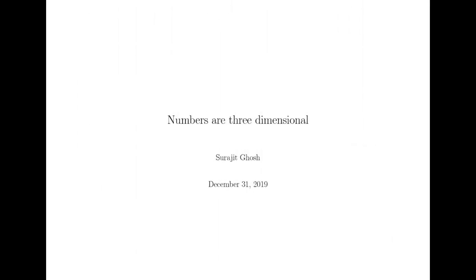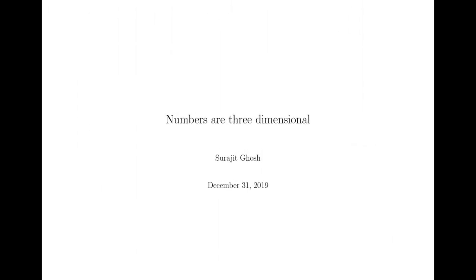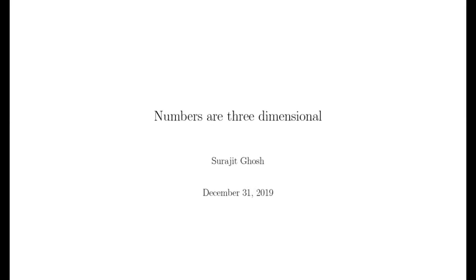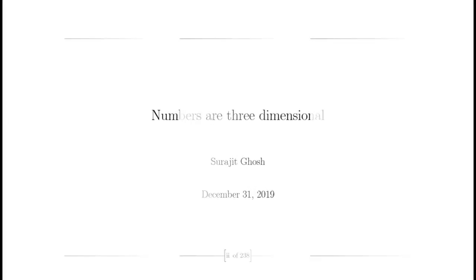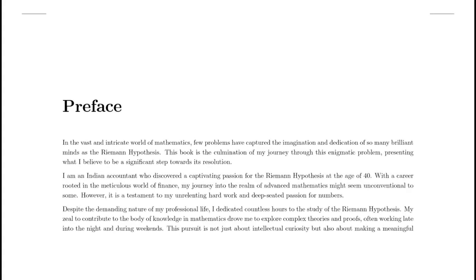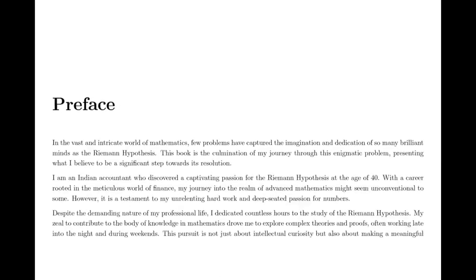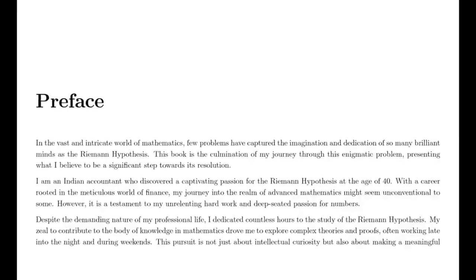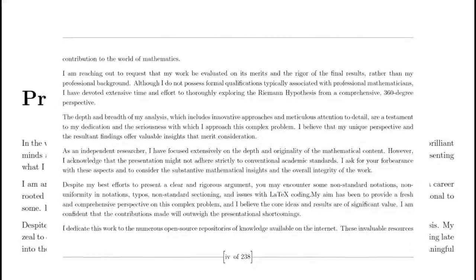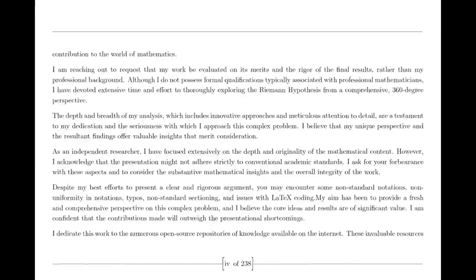Namaste. Once upon a time, in the heart of the 18th century, a brilliant mathematician named Leonard Euler ventured into the mysterious world of numbers. Euler was captivated by the idea of understanding the distribution of prime numbers, those elusive building blocks of arithmetic. In his exploration, he stumbled upon a peculiar series: the infinite sum of the reciprocals of the natural numbers raised to a power. This was the dawn of what would later be known as the Riemann zeta function.